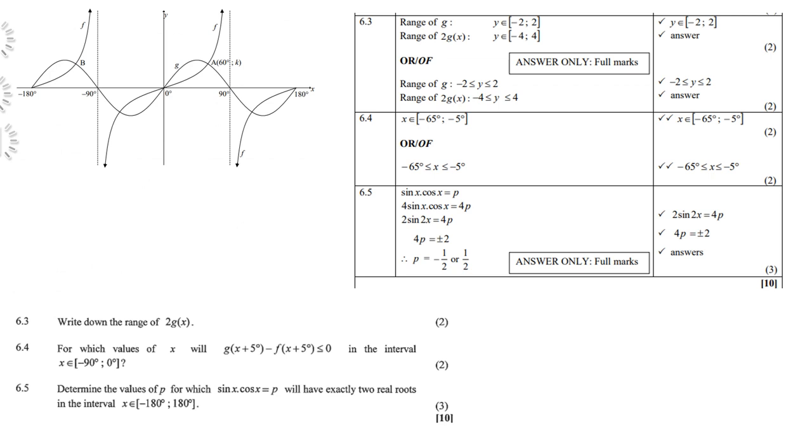That's 6.3. Write down the range of twice g(x). Now remember what is range? Range is the y values. So if you look at the graph of g, then you will see it lies originally between negative 2 and positive 2. But they say twice g(x), so you just multiply by 2. So therefore the range of twice g(x) is negative 4 and positive 4.